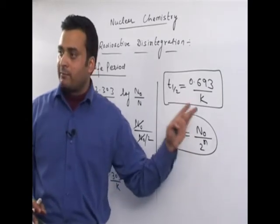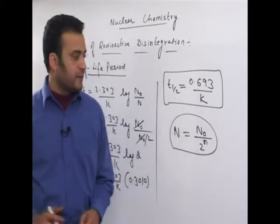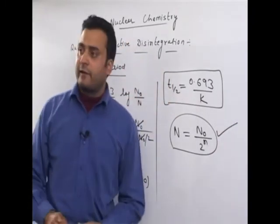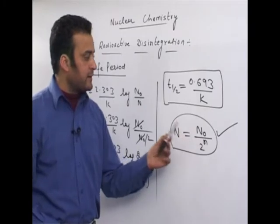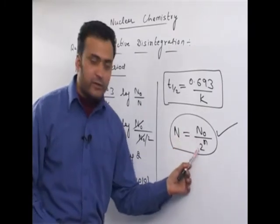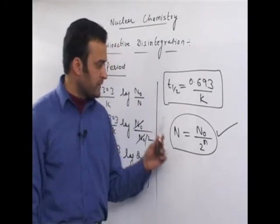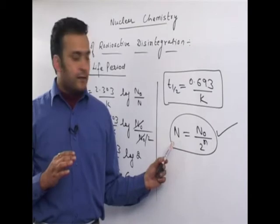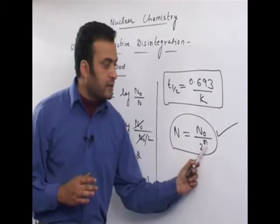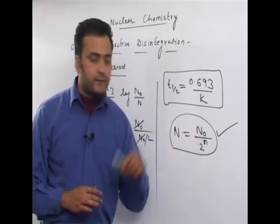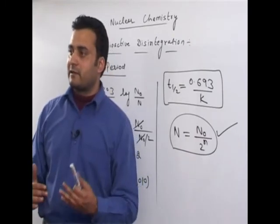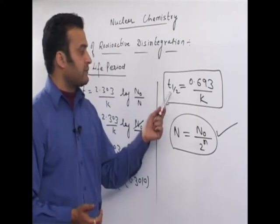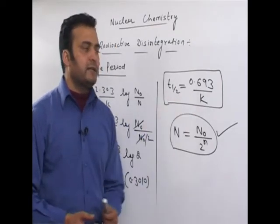Another very important formula for nuclear chemistry numericals using the shortcut method: N equals N naught divided by 2 raised to power n, where N is the number of atoms remaining after n half-lives, N naught is the initial number of atoms, and t half equals 0.693 upon k.